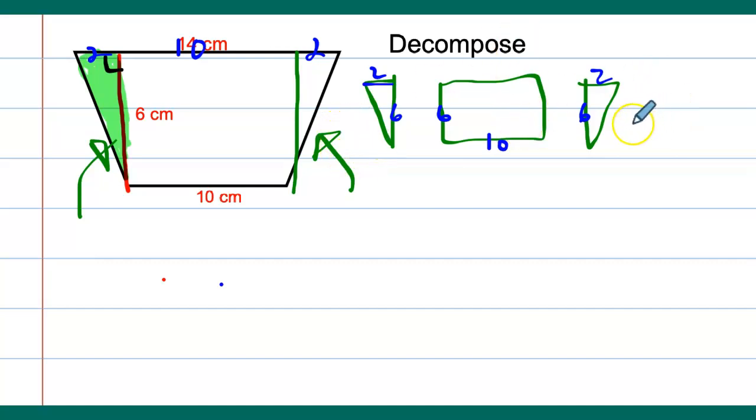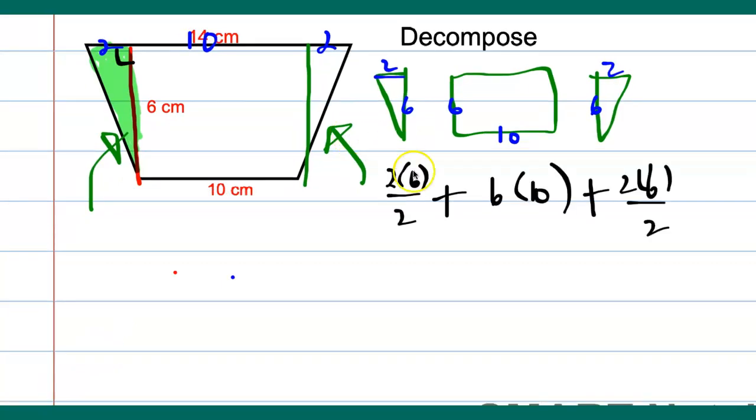So we know that this is one-half base times height, this is length times width, and this is one-half base times height. So let's solve for that. So here we go. We find the area of a triangle, which is two times six divided by two. We find the area of this one, which is six times ten. And we find the area of the last one, which is two times six divided by two.